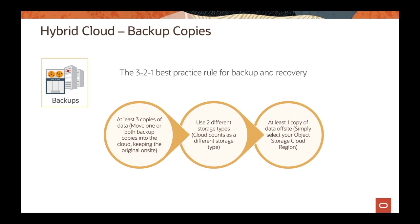Storage gateway also supports backup copies using the traditional 3-2-1 strategy: at least three copies of the data, using two different types of storage, with at least one copy placed offsite. You can use the cloud for the offsite copy — one copy on-premises and two copies in the cloud environment using different storage types — and even place copies across different OCI regions.